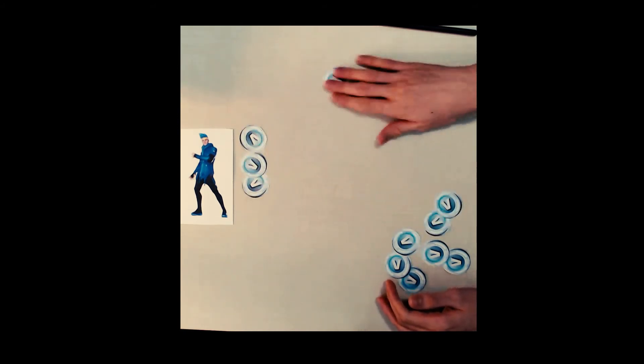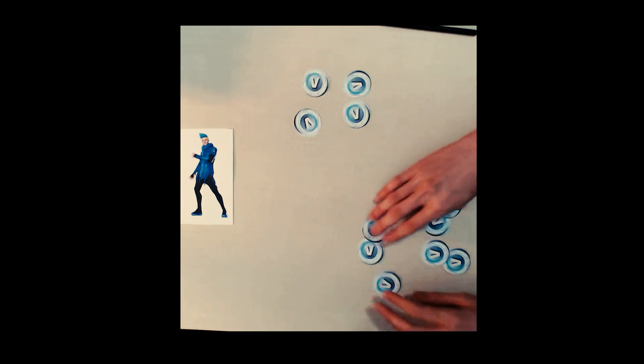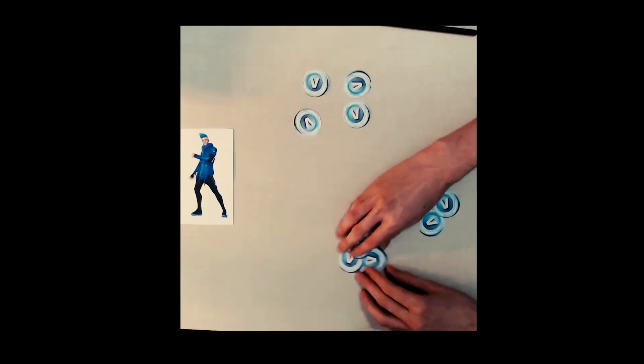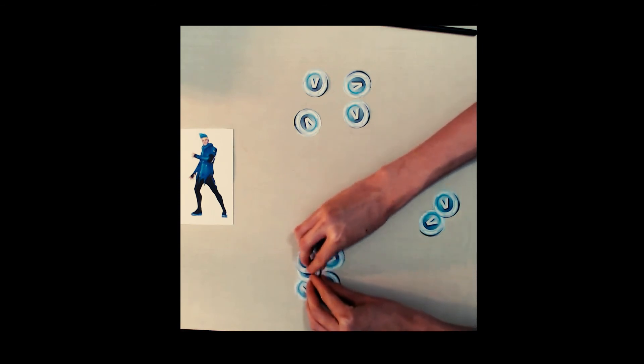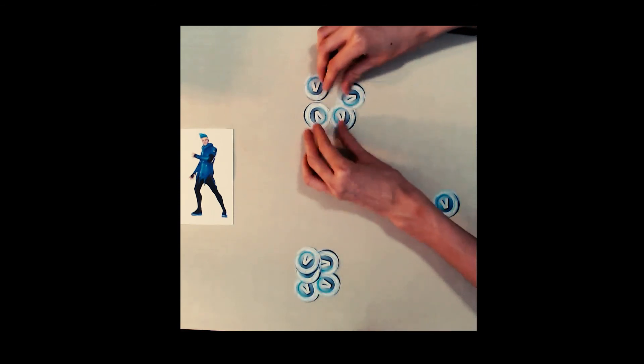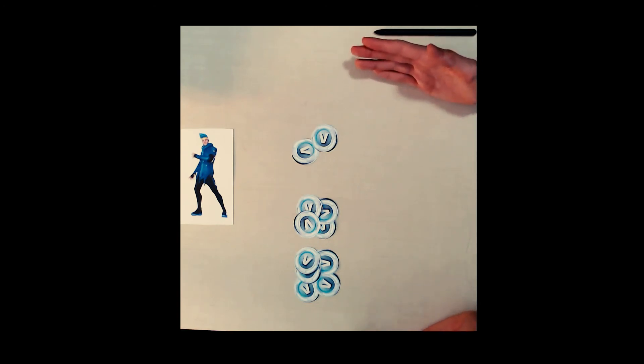So for example, if ninja takes three coins then I can take one, if he takes two I can take two, and we can use that to our advantage. Since we know that we need to leave him with five coins and we know that we can make sure that we will take four coins out of the game no matter what he chooses, there are only two coins left and I can take that if I start the game.